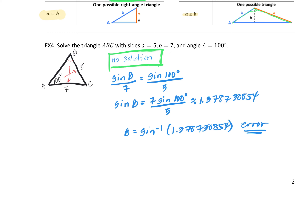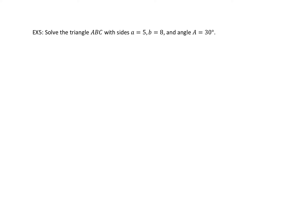At any point when there's no solution, once you notice things aren't working out, you can stop and say no solution. You don't have to go all the way to a calculator error. Now let's look at the case with two solutions — Example 5. We're solving triangle ABC with side A equals 5, side B equals 8, and angle A equals 30 degrees — side-side-angle.